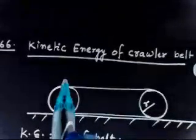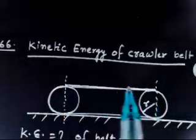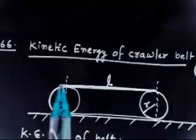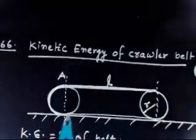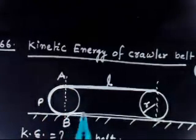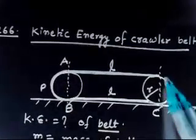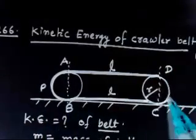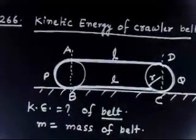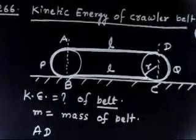We divide the whole belt into parts. The bottom straight part has length l — call it AD. The left semicircle is APB, and the top straight part BC also has length l. The right semicircle is CQD. So we have divided the belt into four parts, where APB and CQD are similar.